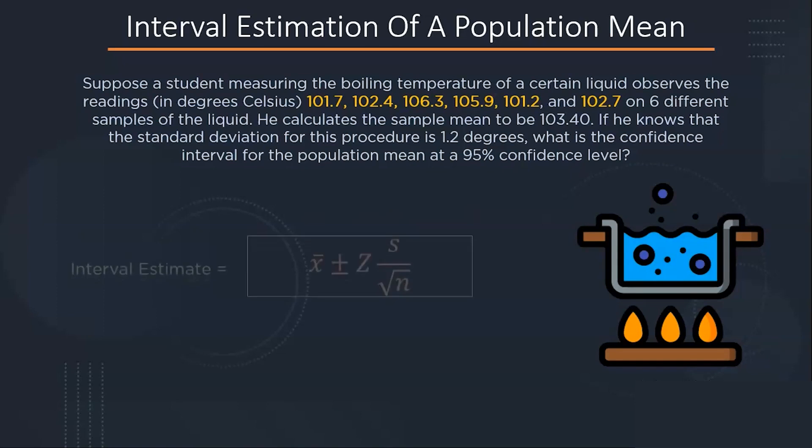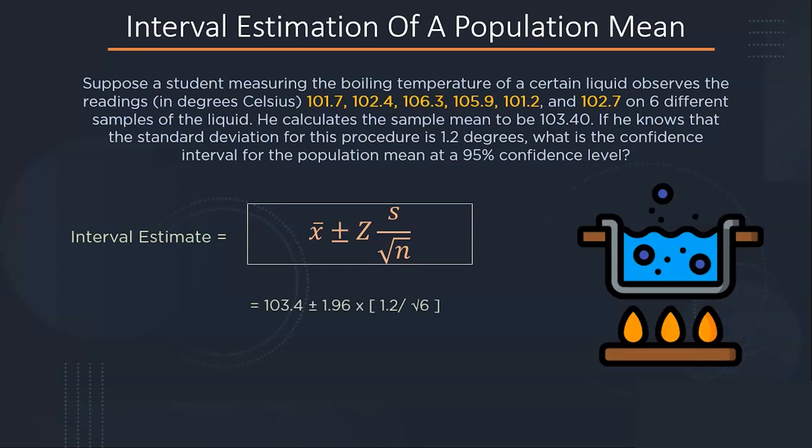So using this formula of interval estimate, x bar plus minus z into s by root n, we'll find the confidence interval. Here x bar is 103.4, and z value is 1.96 corresponding to 95 percent confidence interval, and standard deviation is 1.2 divided by root 6 which is a sample size. So calculating we'll get the value to be 102.47 and 104.33, which shows that it is 95 percent certain that a population parameter lies between this confidence interval.